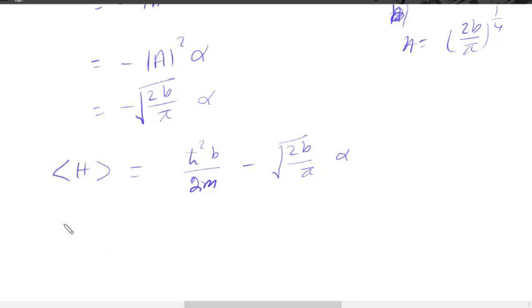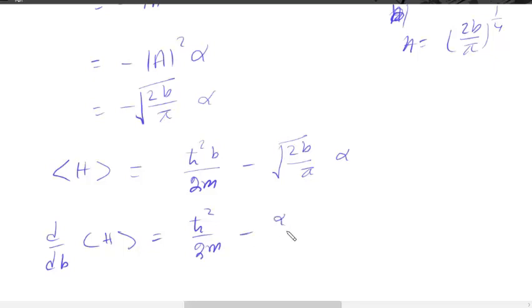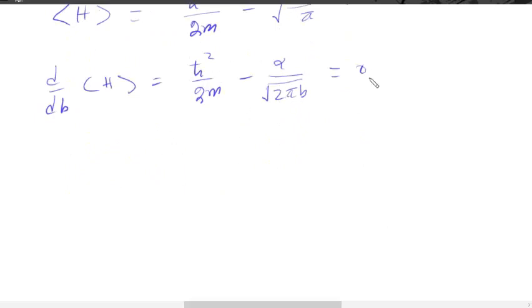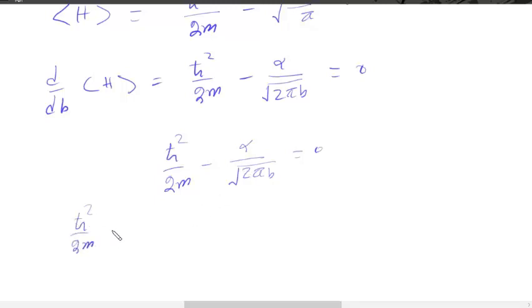Now we minimize the Hamiltonian expectation value by taking the derivative with respect to the adjustable parameter, which is b. The expectation of H equals ℏ² b divided by 2m, minus alpha times √(2/π) times √b. Setting the derivative equal to zero: ℏ²/2m minus alpha divided by (2√(πb)) equals zero.